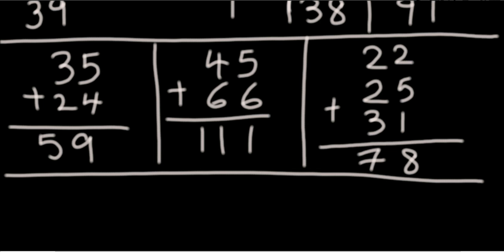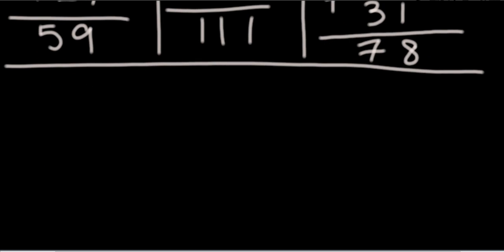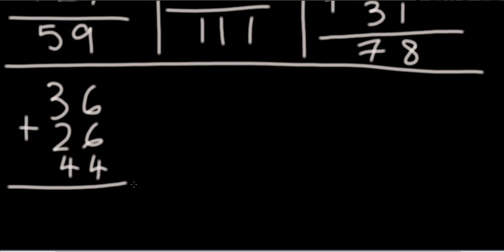Let's take another example: 36, 26, 44. I'm taking this example because when you scan the numbers, do you see the numbers? Do you see the numbers?